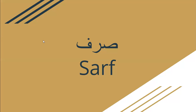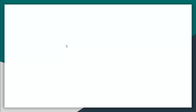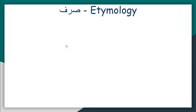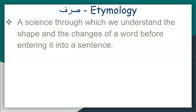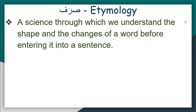Sarf means etymology — or you can say the morphology of a word: how, from where a word comes, and how the shape of a word changes its meaning. It is a science through which we can understand the shape of a word and what changes a word goes through without putting the word into a sentence.